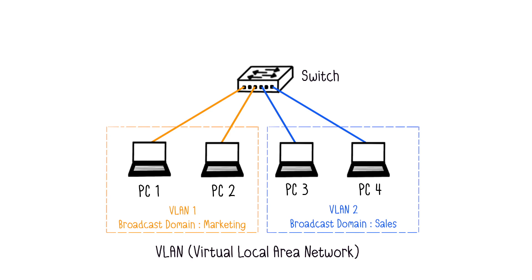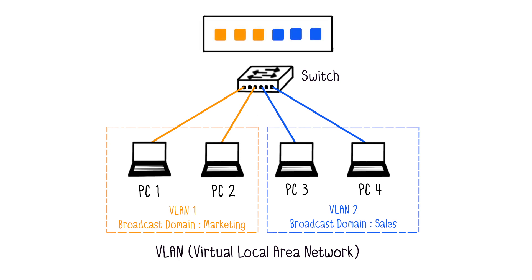VLANs allow dividing an enterprise network into distinct logical segments. To do this, you need to configure each port of the switch, called access ports, to be part of a VLAN. An access port can only be in one VLAN at a time. VLANs per port associate a switch port with a VLAN. Here, all machines using ports in yellow are part of VLAN 1, and those with ports in blue are part of VLAN 2.